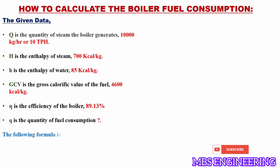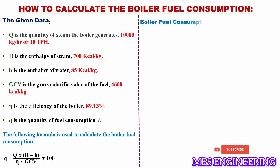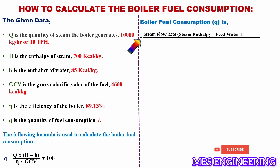The following formula is used to calculate the boiler fuel consumption: small q equals capital Q into (capital H minus small h) into 100, divided by eta into GCV. Or equivalently, q equals the steam flow rate multiplied by (steam enthalpy minus feed water enthalpy) into 100, divided by the boiler efficiency into the fuel gross calorific value.